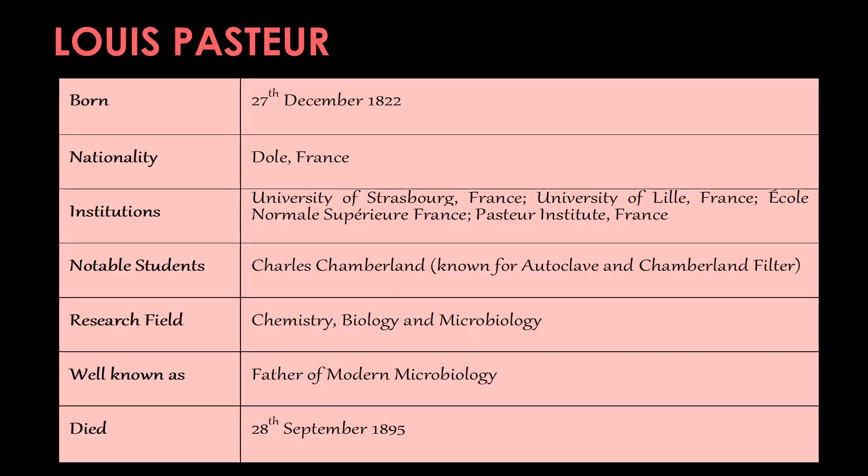Louis Pasteur was born on 27th December 1822 in the place called Dole, France. His research fields include chemistry, biology, and microbiology. He also worked in institutions like the University of Strasbourg, University of Lille, École Normale Supérieure, and Pasteur Institute — all in France. He is very well known as the father of modern microbiology. The scientist Charles Chamberlain is one of his notable students, well known for the discovery of the autoclave and the Chamberlain's filter. Louis Pasteur died on 28th September 1895.